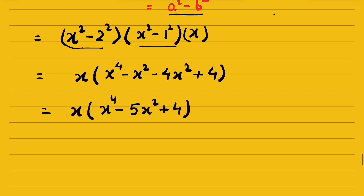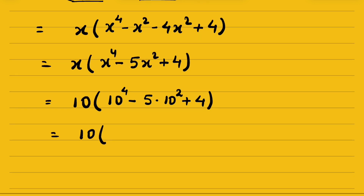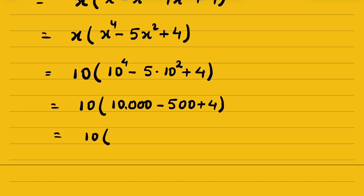Now let's substitute x equals 10: 10 to the power of 4 minus 5 times 10 squared plus 4, times 10. That gives 10,000 minus 5 times 100 plus 4, which is 10,000 minus 500 plus 4, equaling 9,504.